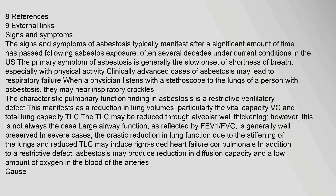The characteristic pulmonary function finding in asbestosis is a restrictive ventilatory defect. This manifests as a reduction in lung volumes, particularly the vital capacity FVC and total lung capacity TLC. The TLC may be reduced through alveolar wall thickening, however this is not always the case. Large airway function, as reflected by FEV1/FVC, is generally well preserved in severe cases. The drastic reduction in lung function due to the stiffening of the lungs and reduced TLC may induce right-sided heart failure, or cor pulmonale. In addition to a restrictive defect, asbestosis may produce reduction in diffusion capacity and a low amount of oxygen in the blood of the arteries.